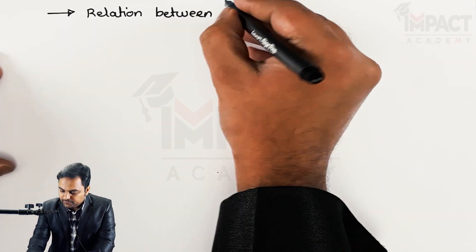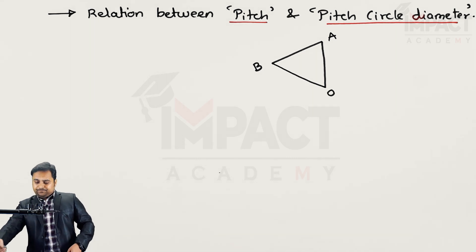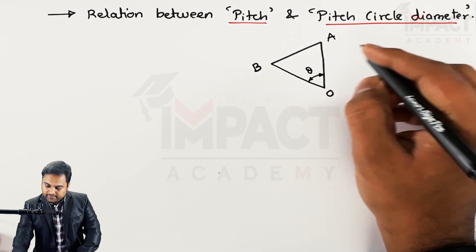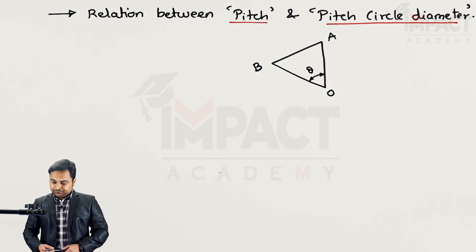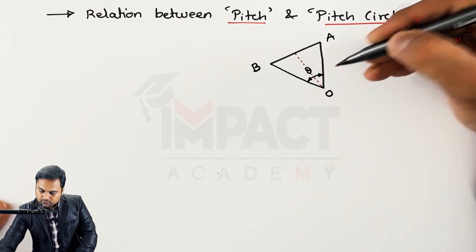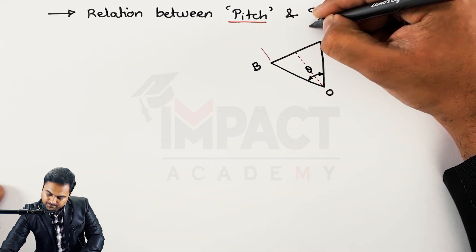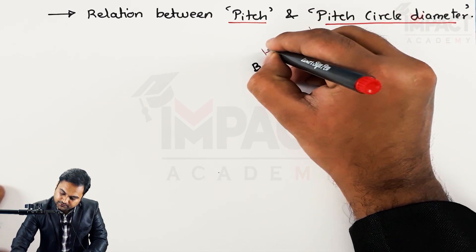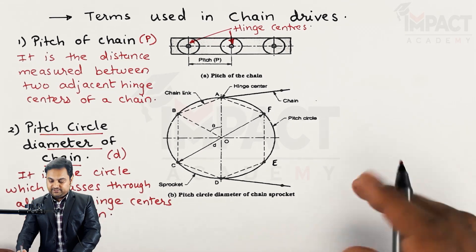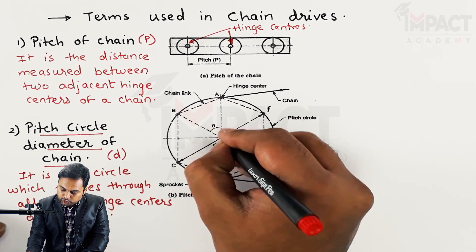The next heading is: relation between pitch and pitch circle diameter of a chain. Triangle AOB is taken from the diagram, where angle AOB is theta. A and B are the hinge centers and O is the center of the sprocket. A perpendicular is drawn from point O to line AB. This line AB indicates the pitch of the chain, denoted as P. From the diagram, the distance OA is the radius of the pitch circle, so OA equals D by 2.